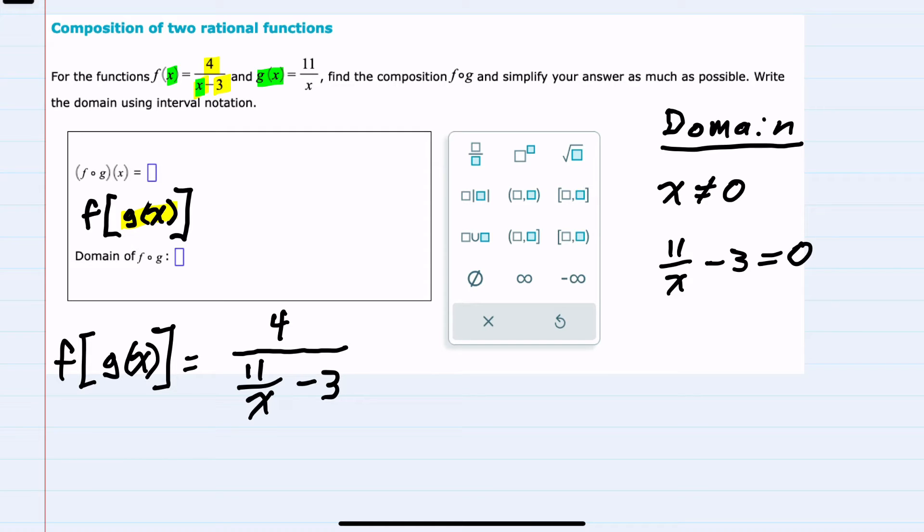And here when we solve for x, we have 11 over x equals 3. When we add the 3 over to the other side, multiplying by x to remove it from the denominator, we have 11 equals 3x. And then isolating the x, we have x equals 11 thirds.